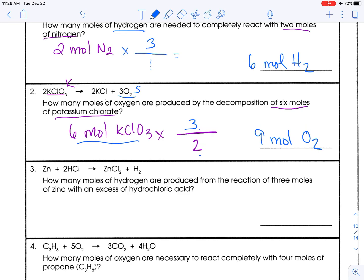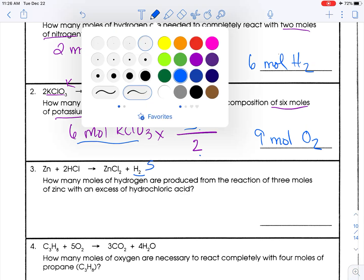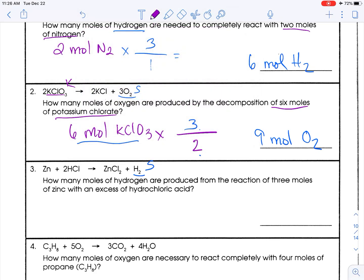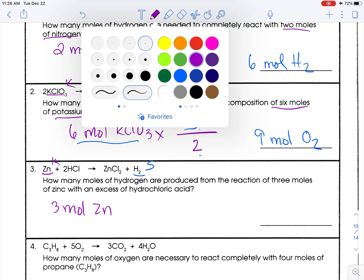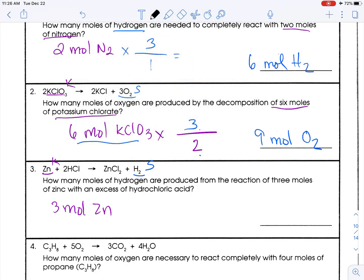How many moles of hydrogen, so hydrogen is what I seek, are produced from the reaction of three moles of zinc with an excess of hydrochloric acid? Three moles of zinc is what I know. See where it says with an excess of hydrochloric acid? Don't worry about that right now.